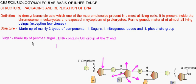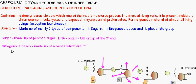Now, coming to nitrogenous bases. Nitrogenous bases are basically made up of four bases, which are of two types. The four bases are: Adenine, Guanine, Cytosine, and Thymine. Among these, a few are purines and a few are pyrimidines.